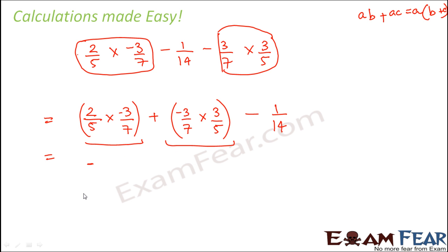So let's make use of the same rule. So we take minus 3 by 7. So minus 3 by 7 is the a here. So a into b plus a into c. So we take a common. So we are left with 2 by 5 plus 3 by 5 and minus 1 by 14.